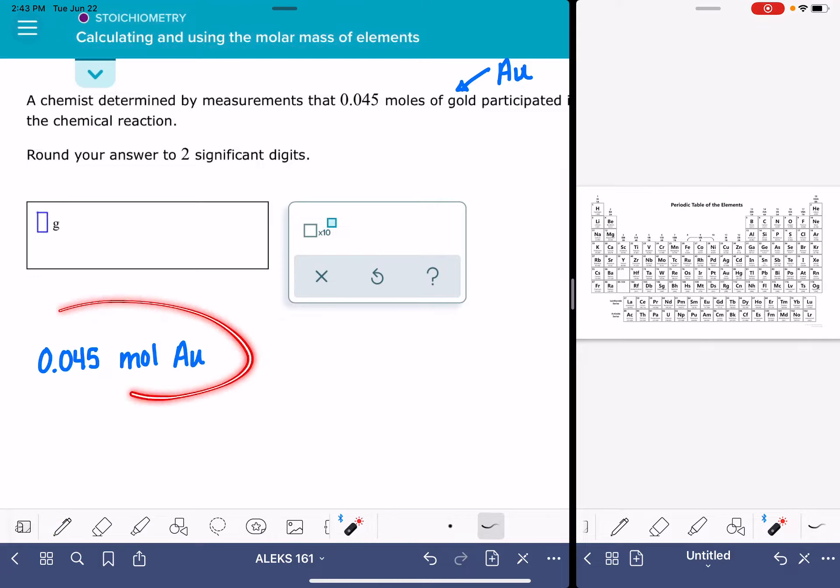So once you get all of this information taken out of the problem, you want to multiply that information by a conversion factor. The conversion factor is going to be in the form of a fraction. And on the bottom of the fraction, we want to match these units right here. So since I have moles of Au, moles of gold, I want those exact same units down here on the bottom of my fraction. If the problem had given me grams of gold, then I would want grams of gold down here on the bottom of the fraction.